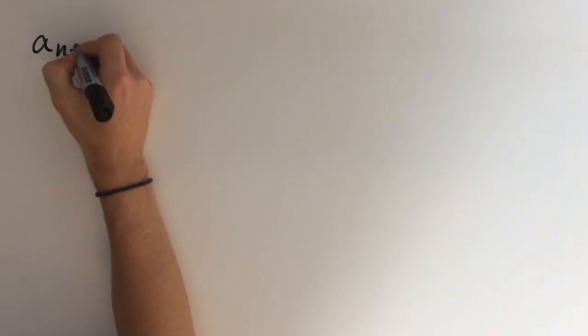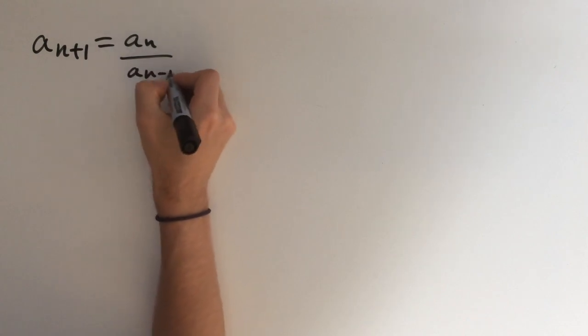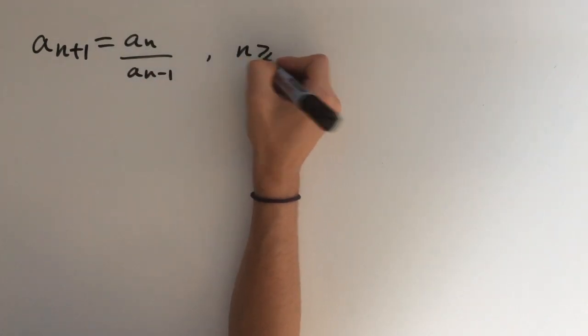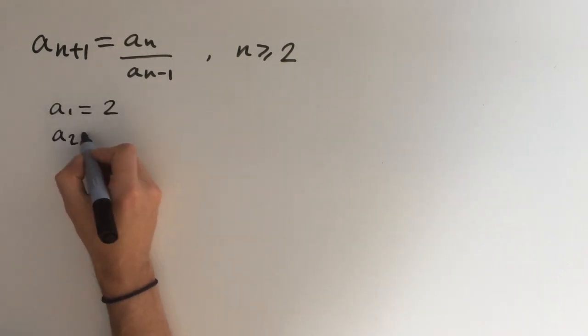The sequence we're given has the recursive property that a_{n+1} equals a_n over a_{n-1}. This is true for all n greater than or equal to 2. We're also given the first two terms, a_1 equals 2 and a_2 equals 6.